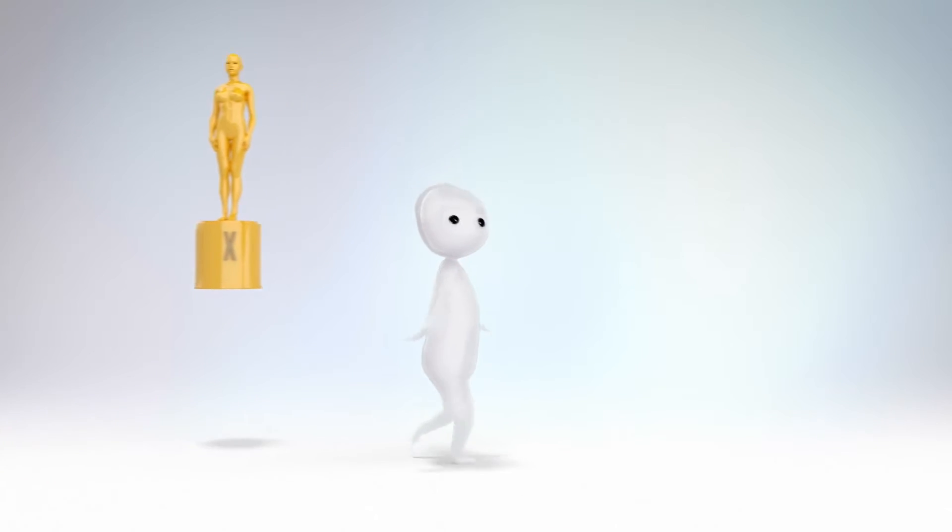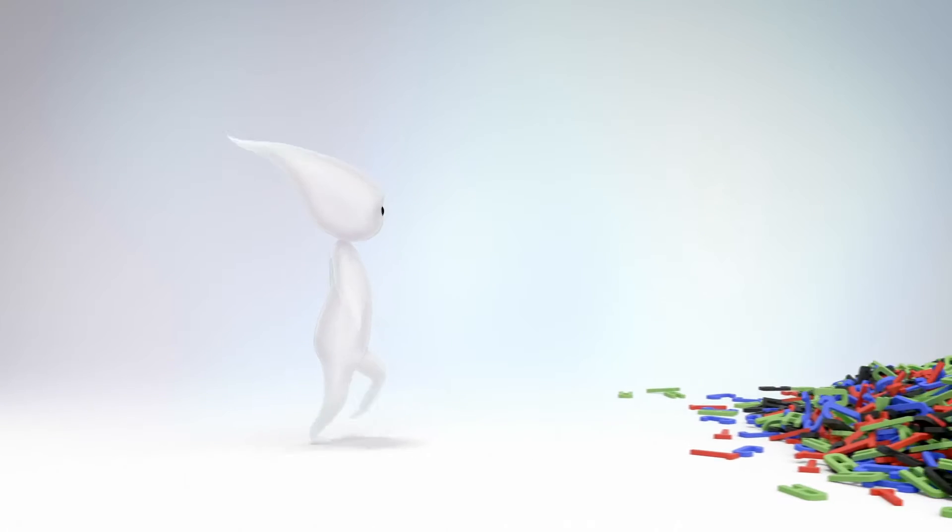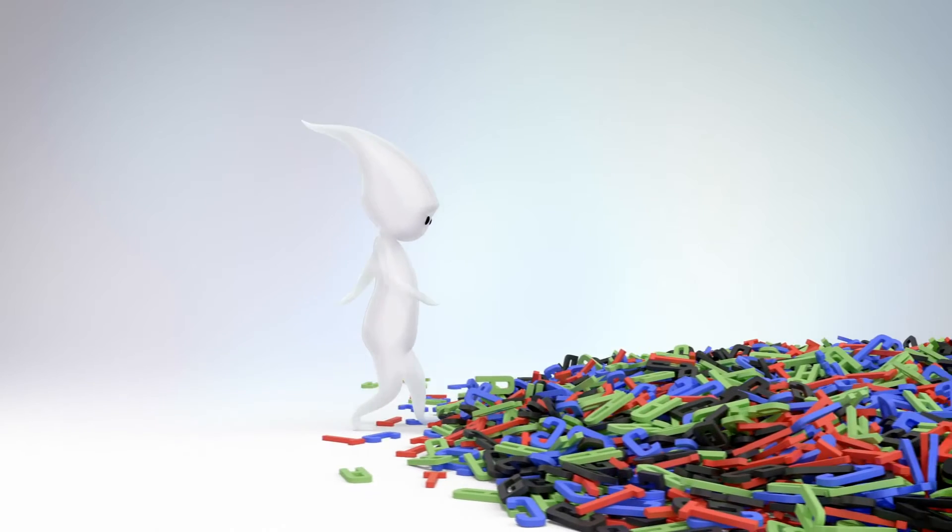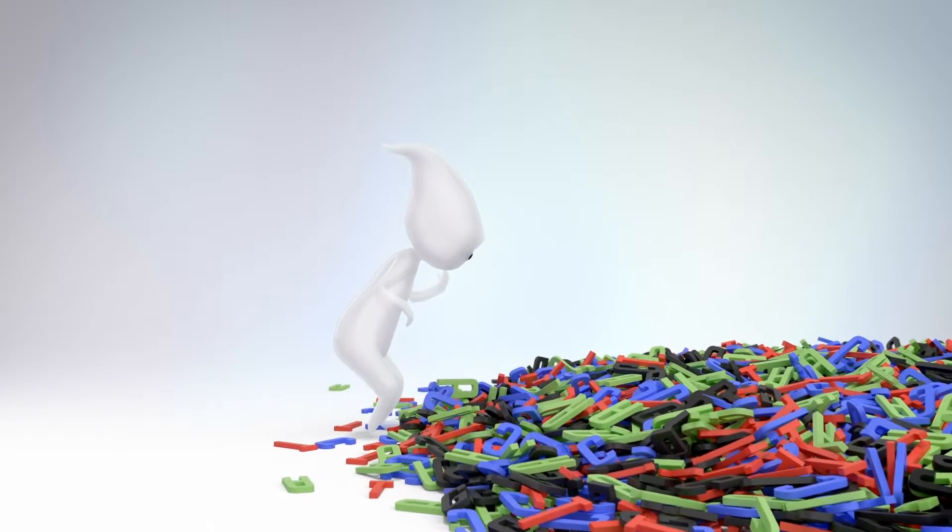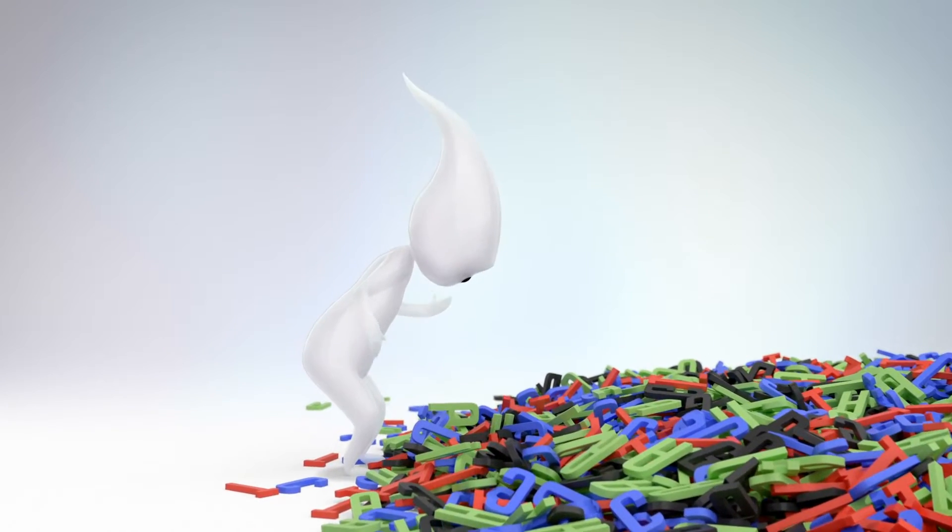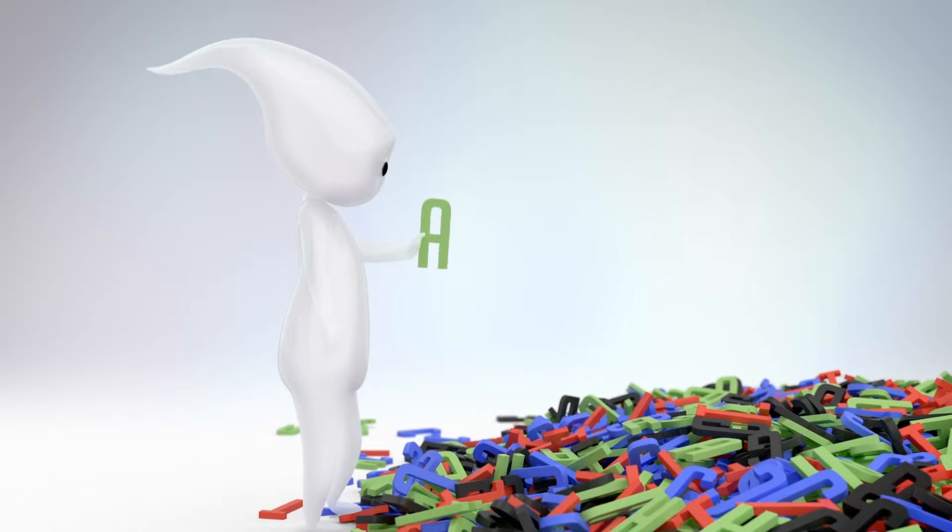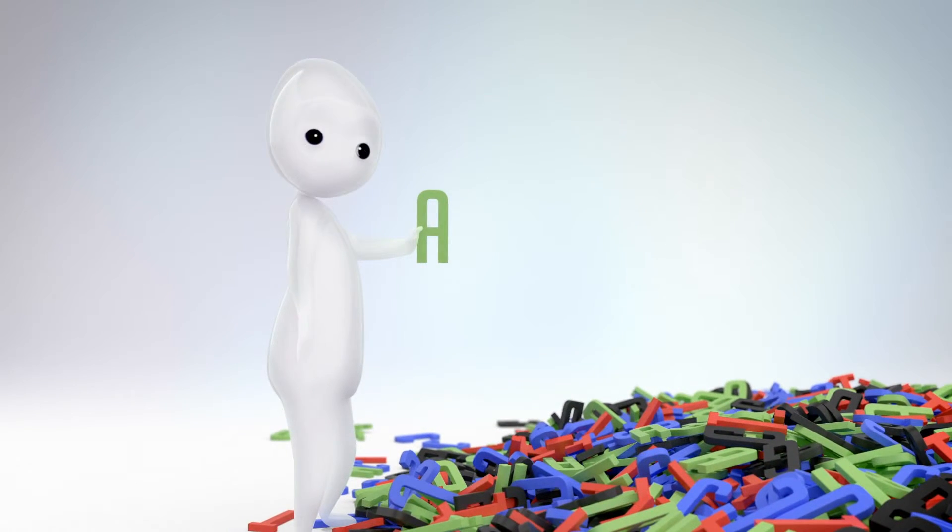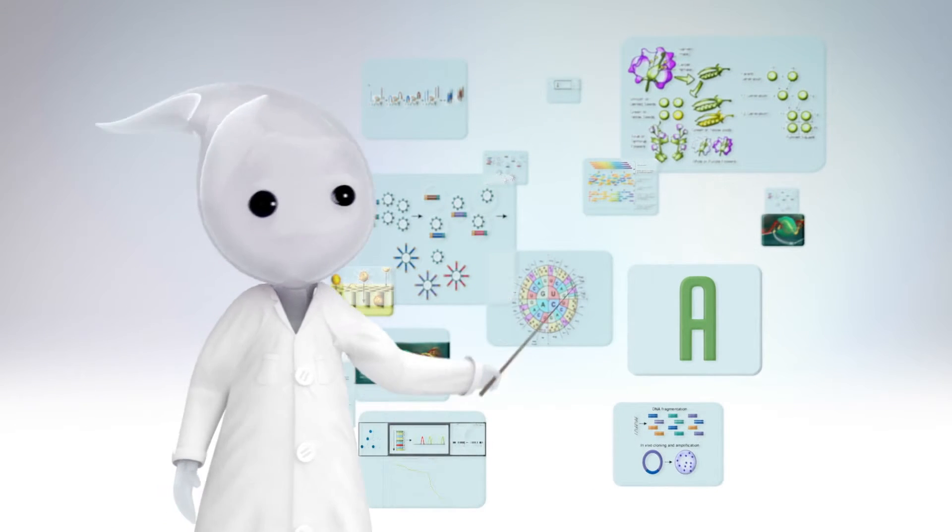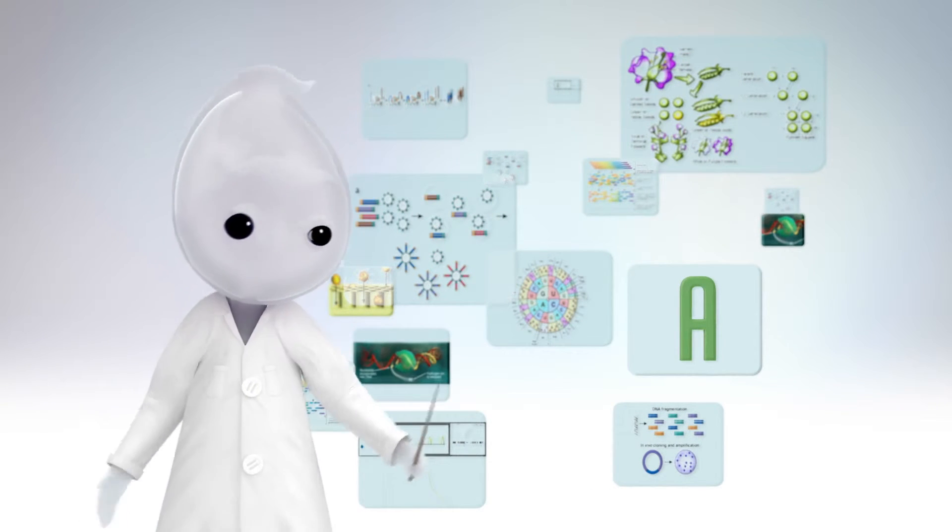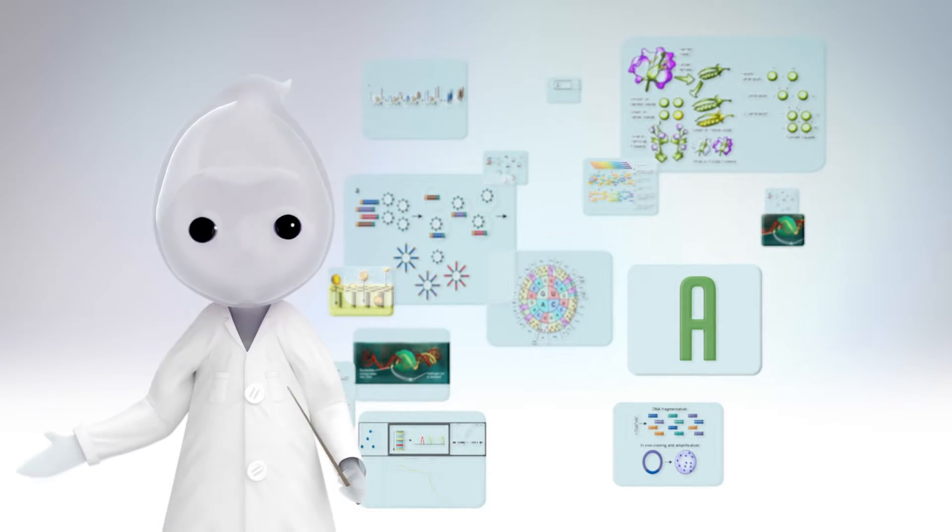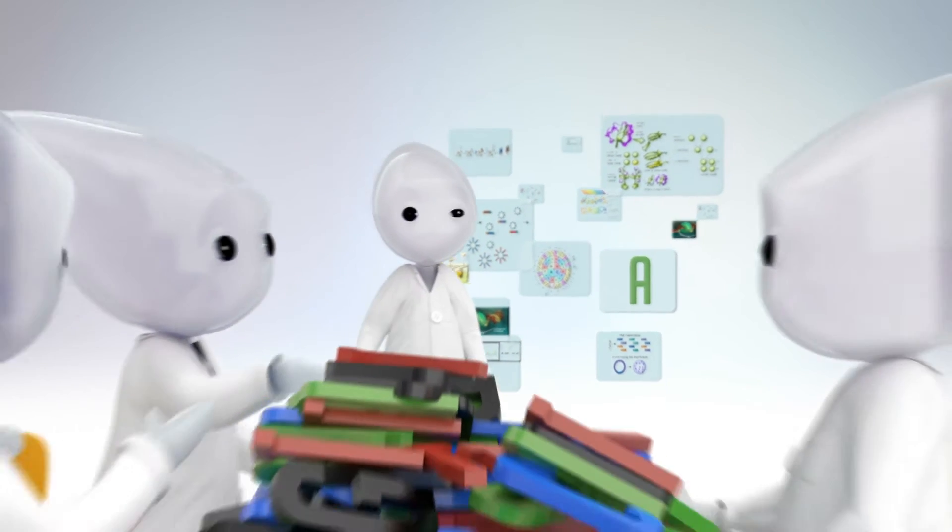Étant donné le grand nombre de variations chez chaque individu, le défi dans le cas d'une maladie génétique consiste à identifier LA variation responsable, ce qui revient à chercher une aiguille dans une botte de foin. Cette analyse utilise de nombreux outils informatiques et requiert l'expertise combinée de bioinformaticiens, de biologistes et de généticiens cliniques.